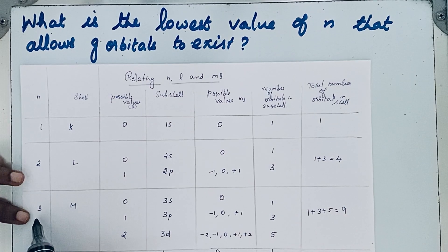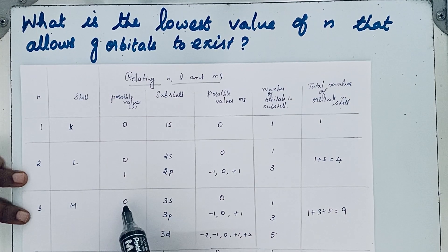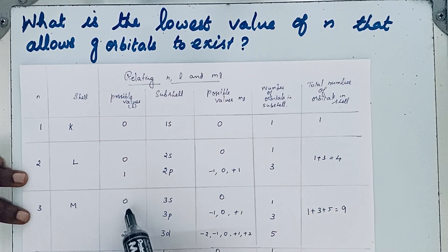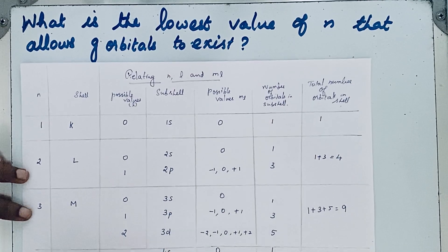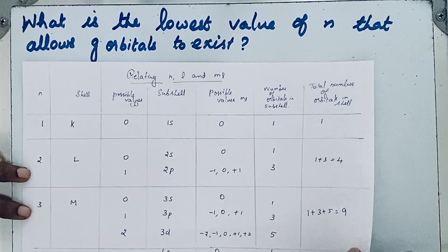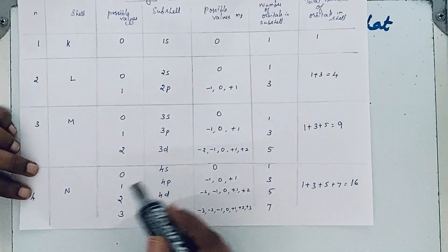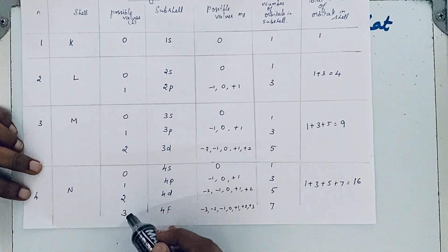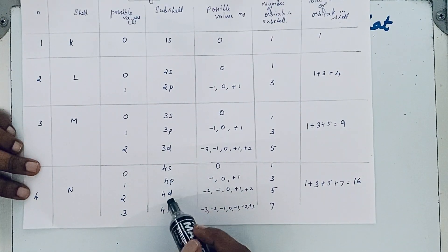If n is equal to 3, there are three possible l values: 0, 1, and 2, giving the 3s, 3p, and 3d orbitals. If n is equal to 4, the l values are 0, 1, 2, and 3, giving the 4s, 4p, 4d, and 4f orbitals.